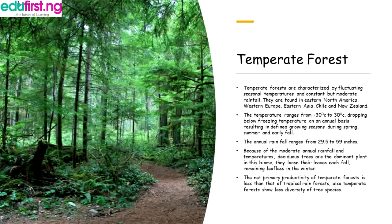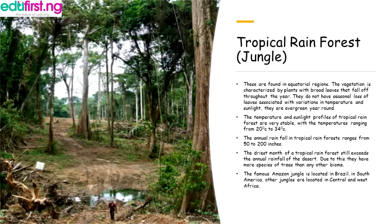Tropical rainforests — also called jungle — are found in equatorial regions. The vegetation is characterized by plants with broad leaves that fall off throughout the year. They do not have seasonal loss of leaves associated with changes in temperature and sunlight; they are evergreen year round.